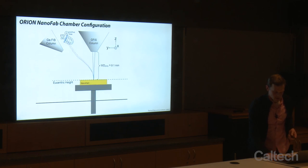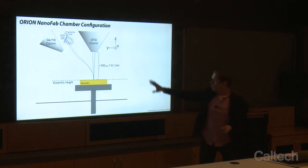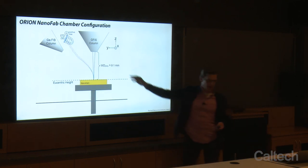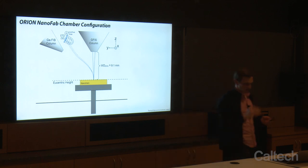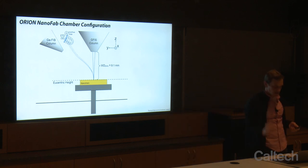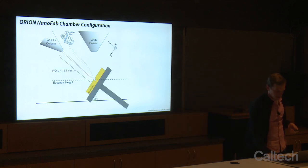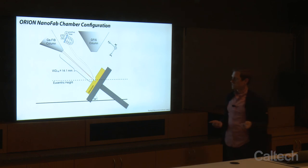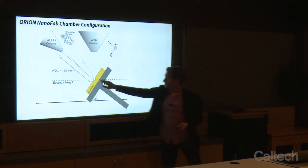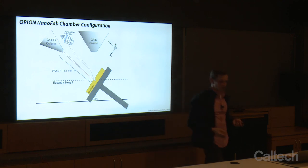The working distance is about 9.1 millimeters at eucentric height from the perspective of the helium or neon ion beam, and about 14 millimeters from the perspective of the gallium ion beam. Both will generate secondary electrons that are used to form the image.